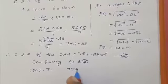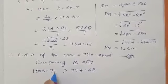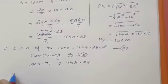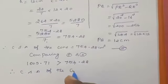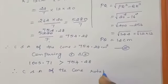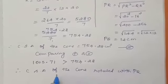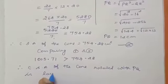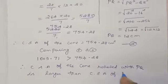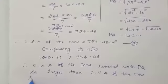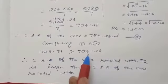Which is the biggest one? 1005.71. So we can write the answer. CSA of the cone rotated with PQ is larger than CSA of the cone rotated with QR. Because first one is PQ, second QR.